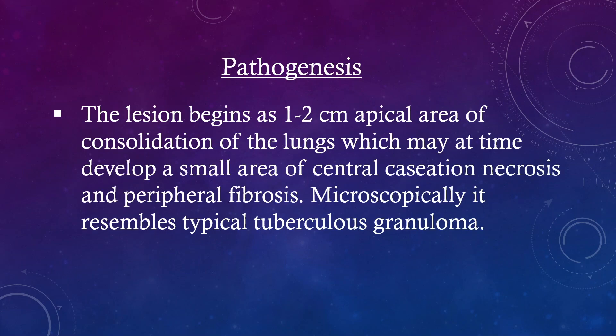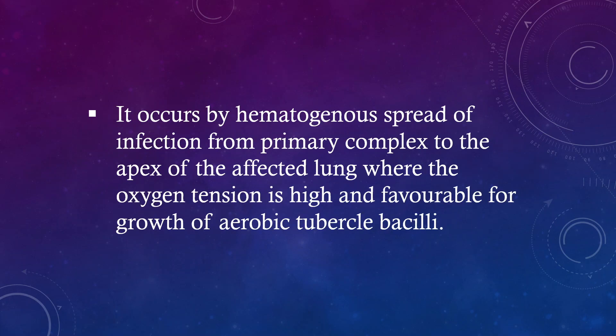Pathogenesis: The lesion begins as a 1–2 cm apical area of consolidation of the lungs, which may at times develop a small area of central caseation necrosis and peripheral fibrosis. Microscopically, it resembles a typical tuberculosis granuloma. It occurs by hematogenous spread of infection from the primary complex to the apex of the affected lung, where the oxygen tension is high and favorable for growth of aerobic tubercle bacilli.